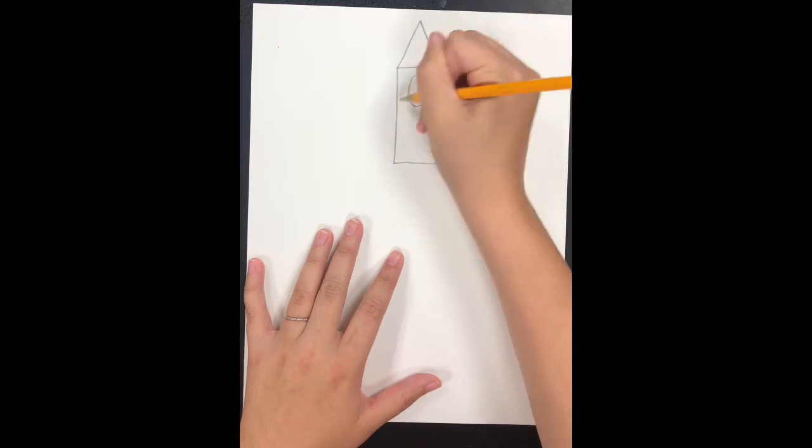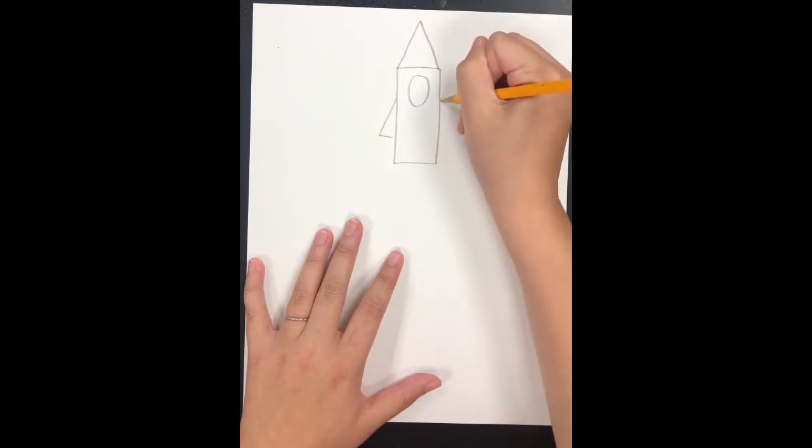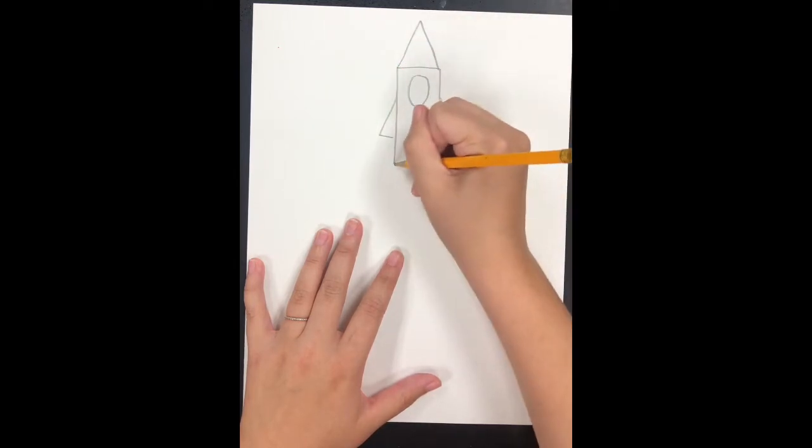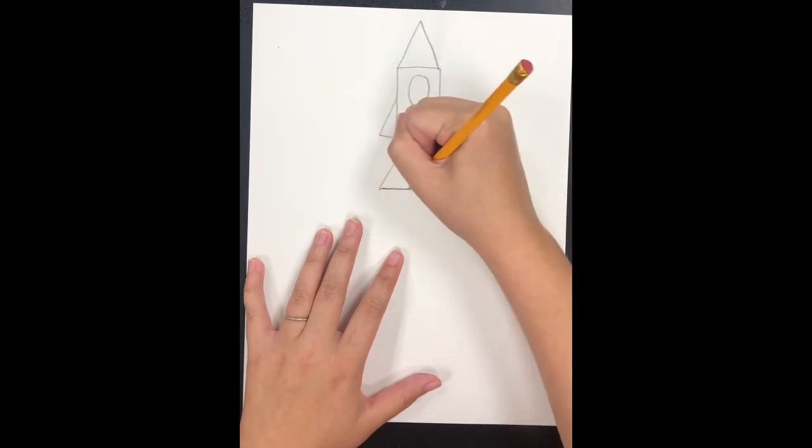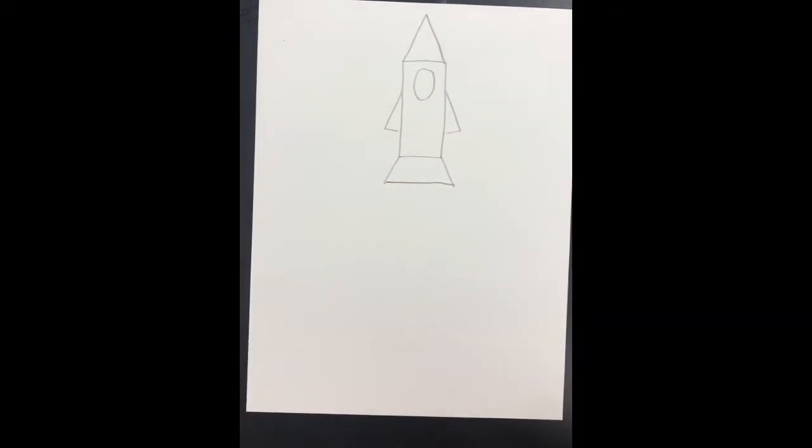Inside our window will be a circle or an oval, two triangles on the side for the wings, two diagonal lines, and a horizontal line to make the tail of the rocket.